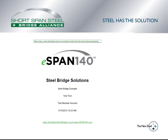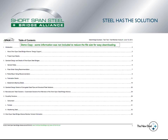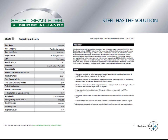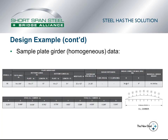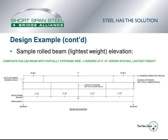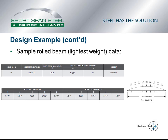This slide gives an example of the first page of steel bridge solutions. The second page includes a table of contents of what is included in the solutions packet, along with a review of the project input details. The following slides show examples of design details included in the solutions packet. This slide shows a sample plate girder elevation view for a homogeneous plate girder, showing details for stud placements, bearing stiffeners, transverse stiffeners, and lengths. The solutions packet also gives a table showing flange sizes, weights, and cambers of the girder design. The example rolled beam lightest weight elevation view is also shown with a similar design table.